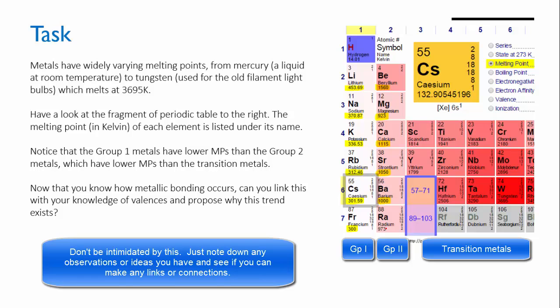And the group 2 metals have lower melting points than the transition metals. I'd like you now to think about how metallic bonding occurs, and then link that with your knowledge of valences and propose an explanation for why this trend should exist.